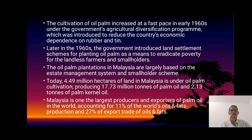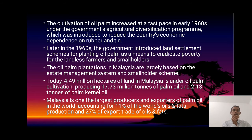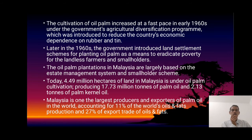The cultivation of oil palms increased rapidly in the early 1960s under the Government Agricultural Diversification Program, which was introduced to reduce the country's economic dependence on rubber and tin. Later, the government introduced land settlement schemes for planting oil palms as a means to alleviate poverty for landless farmers and smallholders.